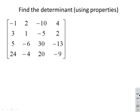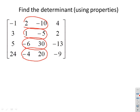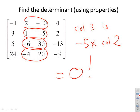Next one — this matrix is totally full but there are often simplifications if you look for them. Between the two and the ten there's a factor of minus five; between the one and the minus five there's a factor of minus five; between the six and the minus thirty there's a factor of minus five; between the minus four and the twenty there's a factor of minus five. So column three is minus five times column two. The rule is: if one column is a multiple of another, the determinant is zero — so by inspection the determinant is zero.